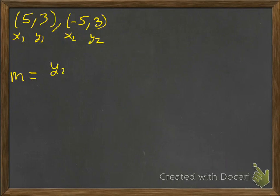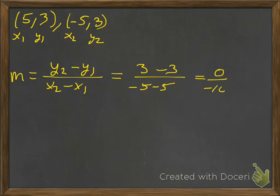Slope is y2 minus y1 over x2 minus x1. So that will be 3 minus 3 over negative 5 minus 5. That's going to be 0 over negative 10. And that's a 0 over a number, so that's 0. So this is equal to 0.